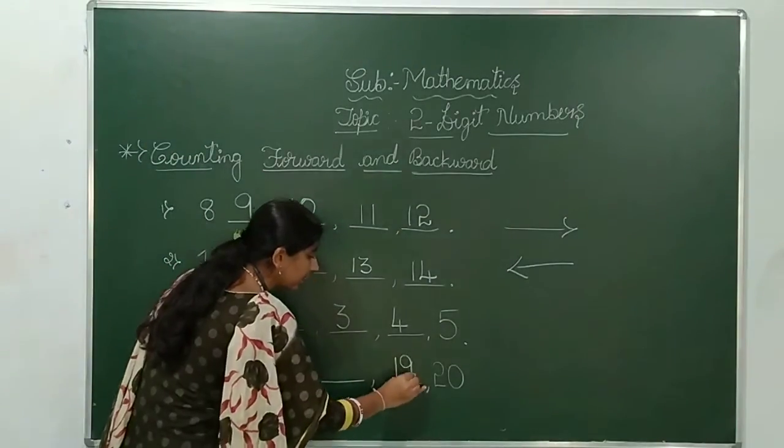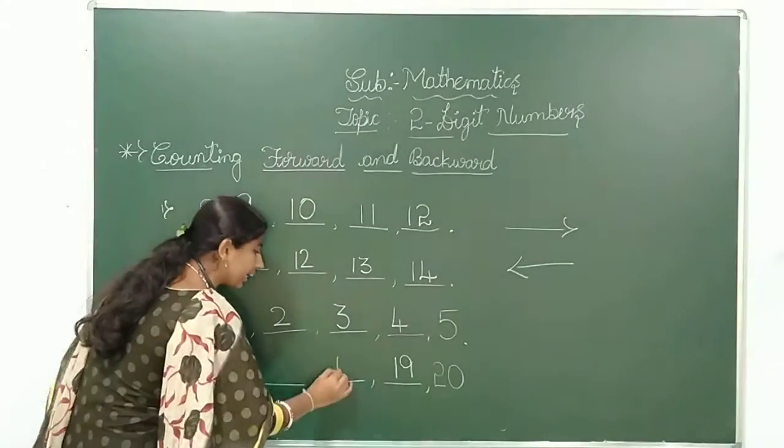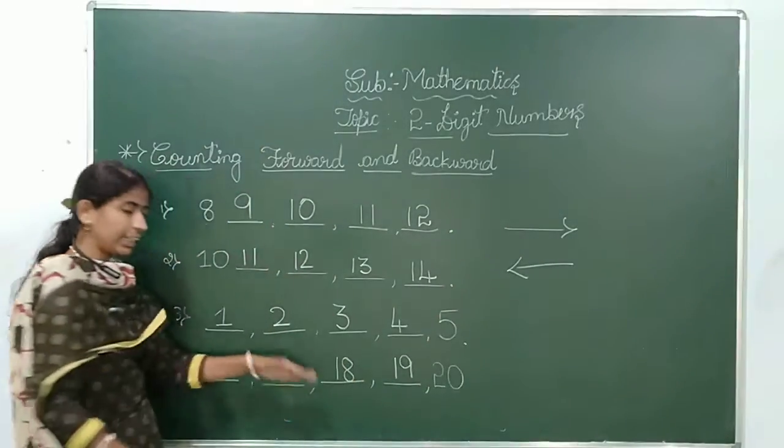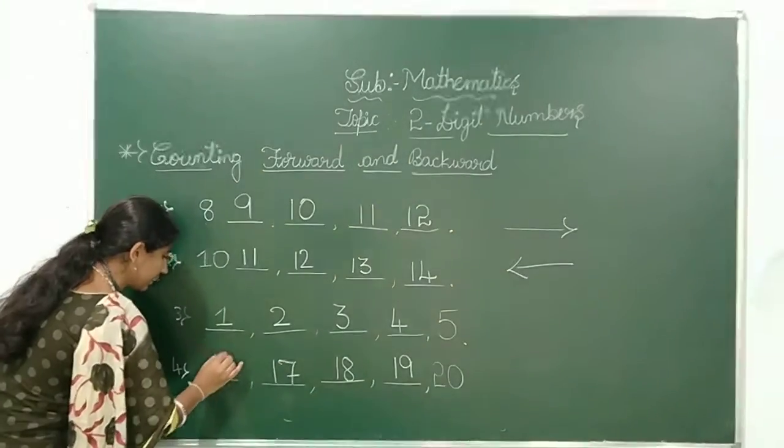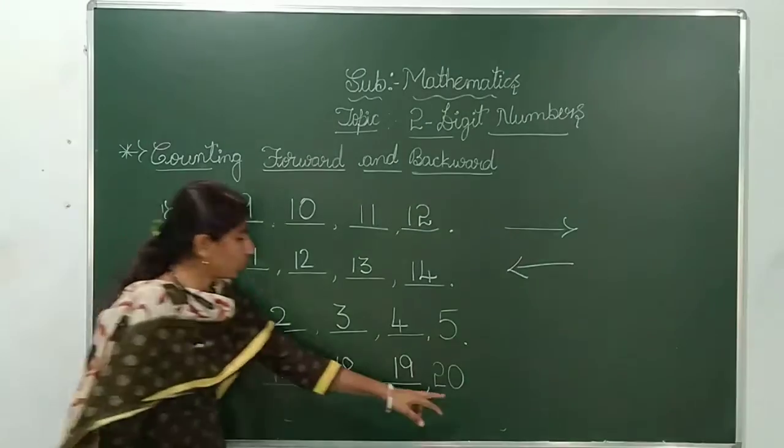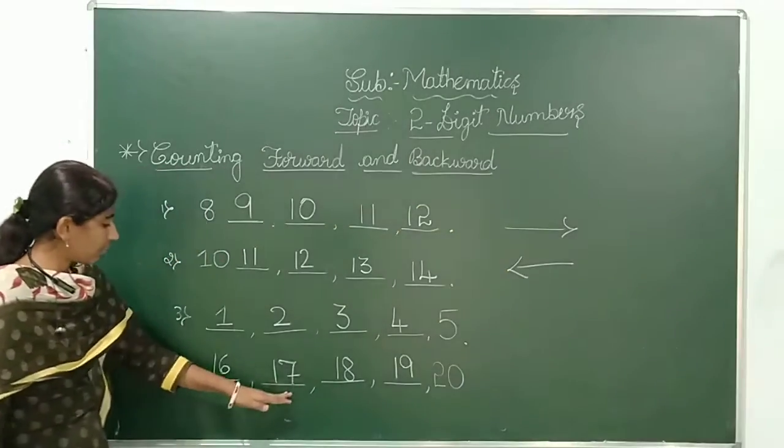Let us go to the fourth example: 20. Then 19, 18, then 17, and 16. 20, 19, 18, 17, 16.